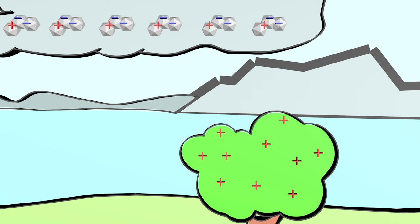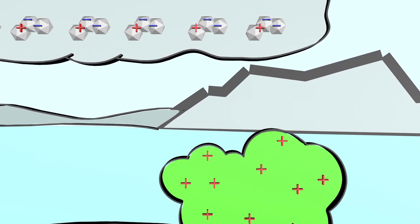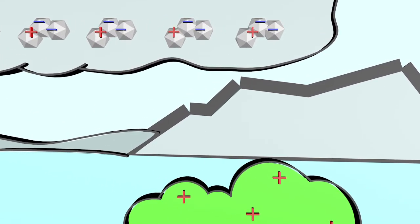The tree, which is now positively charged, attracts the excess electrons from the cloud. Some electrons are now flowing through the air towards the tree. As a result, the air is heated extremely strongly at this point so that it glows.